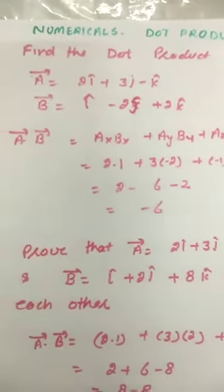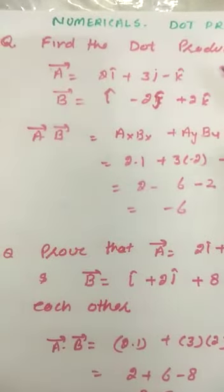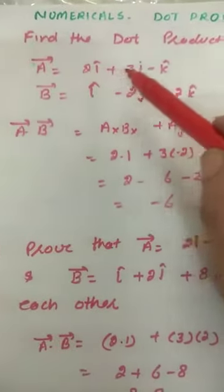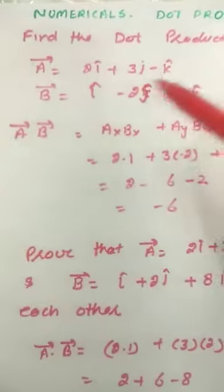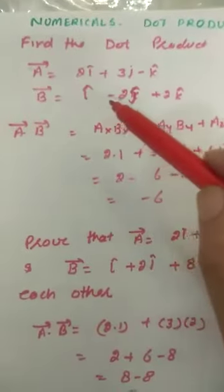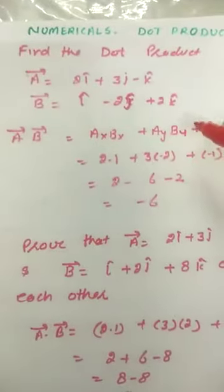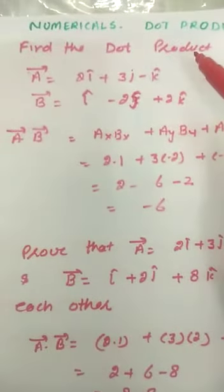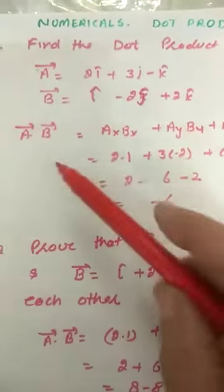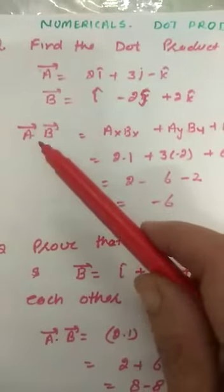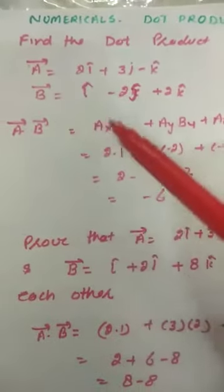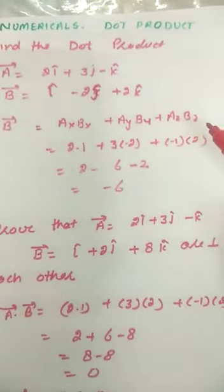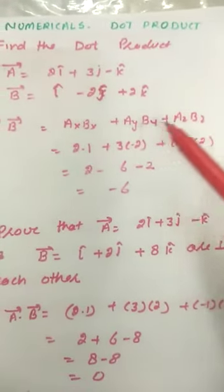First of all, take the basic and simple numerical. Let us suppose vector a is equal to 2i cap plus 3j cap minus k cap, and vector b is equal to i cap minus 2j cap plus 2k cap. We have to find its dot product. The formula for the dot product is: vector a dot b equals ax·bx plus ay·by plus az·bz.